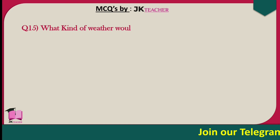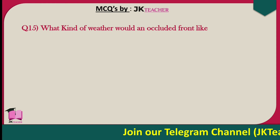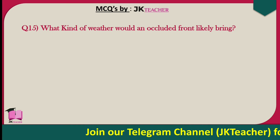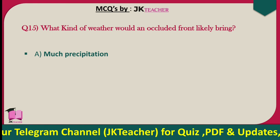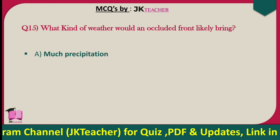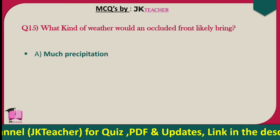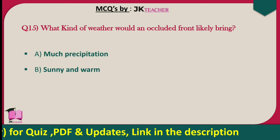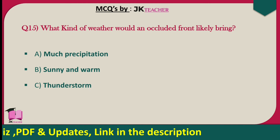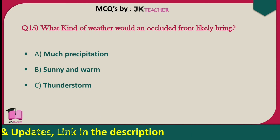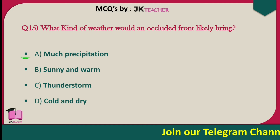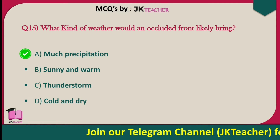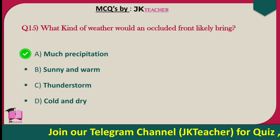What kind of weather would an occluded front likely bring? Options are much precipitation, sunny and warm, thunderstorm, and cold and dry. The right answer is option A — much precipitation.